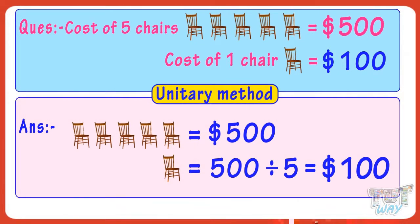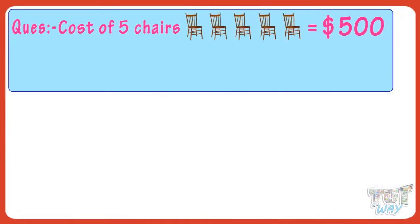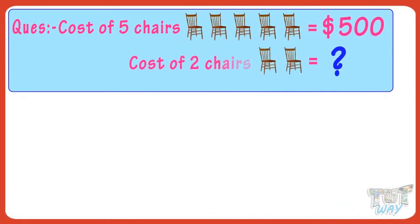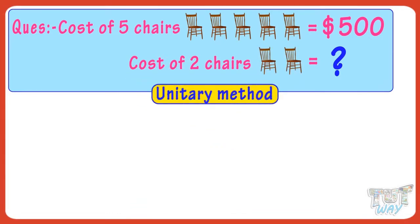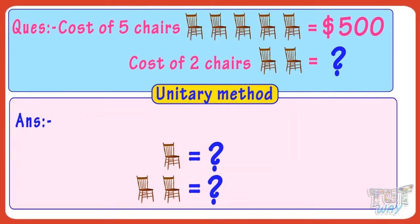Now let's take another example. The cost of five chairs is $500. Then what is the cost of two chairs? Let's find it out with the help of the unitary method — that is, we will first find the cost of one chair and then find the cost of two chairs.